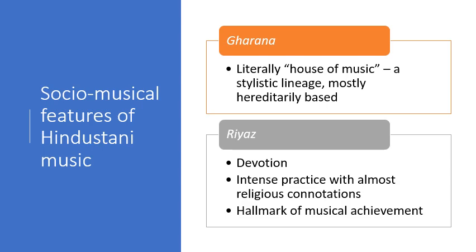One more brief term: chilla. Dan Neumann talked about it in the article — it's a 40-day period of intense practice on something. It's used in music and in other areas of life. I've known many musicians who've sequestered themselves for 40 days to learn a certain technique. This 40-day concentration with intense devotion, doing nothing else besides practicing that one thing, is another hallmark of the importance of riaz — the intensity of your devotion to music rather than any audible judgment of accomplishment.